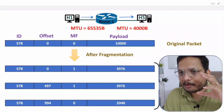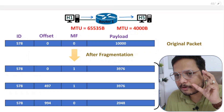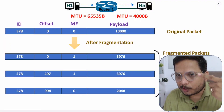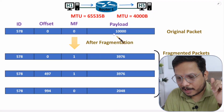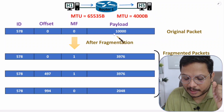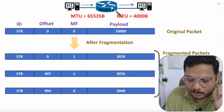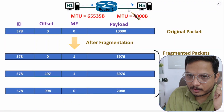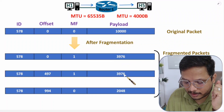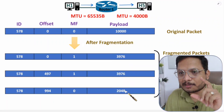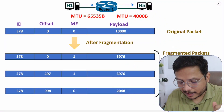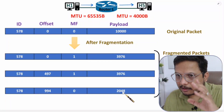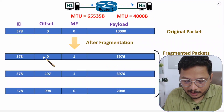The ID is the unique identity number of the given packet. Offset is the fragmentation offset. MF bit means more fragments to follow. Payload is the size of the data. Our original packet has a payload of 10,000 bytes. Router one cannot send 10,000 bytes in one frame, so it performs fragmentation. The 10,000 bytes are bisected into three fragments: 3976, 3976, and 2048 bytes. If you add all three you get 10,000.